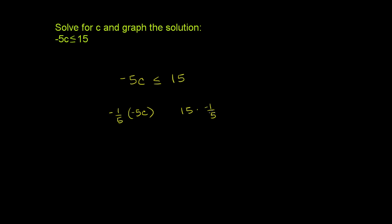We are multiplying both sides by negative 1 fifth, which is the equivalent of dividing both sides by negative 5. So we need to turn this from a less than or equal to a greater than or equal. And now we can proceed solving for c.